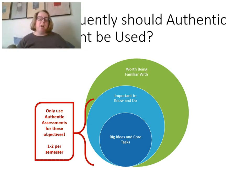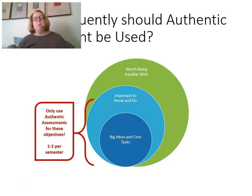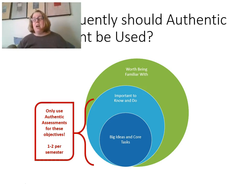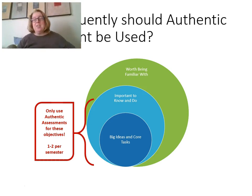If we look at our curricular goals, we have big ideas and core tasks — the kinds of things you'd use to sum up your course in two or three statements. Then there are things that are important to know and do, like the standards you have to cover. And then things worth being familiar with, the kinds of things taught every day. I'm really going to focus my authentic assessments on that center core — in actuality, one or two a semester, depending on content area. In history it might be a history fair project, or a science fair project in science, thinking about how to meet a large number of objectives.